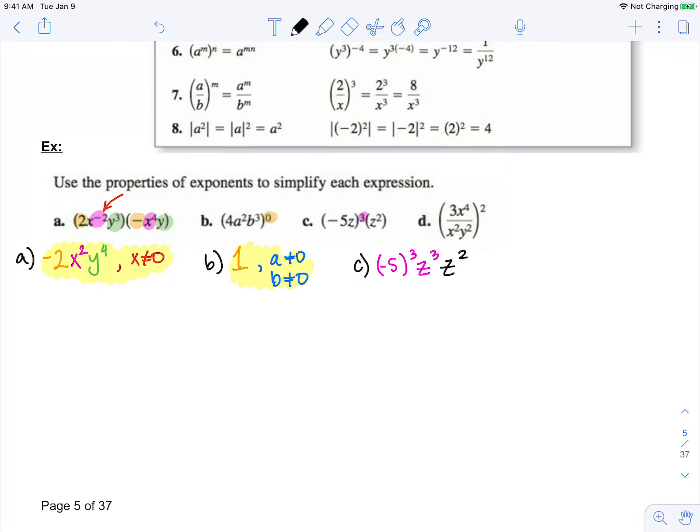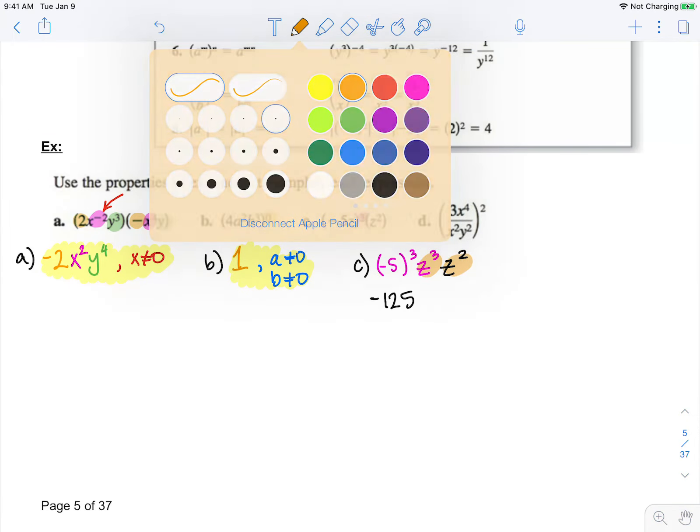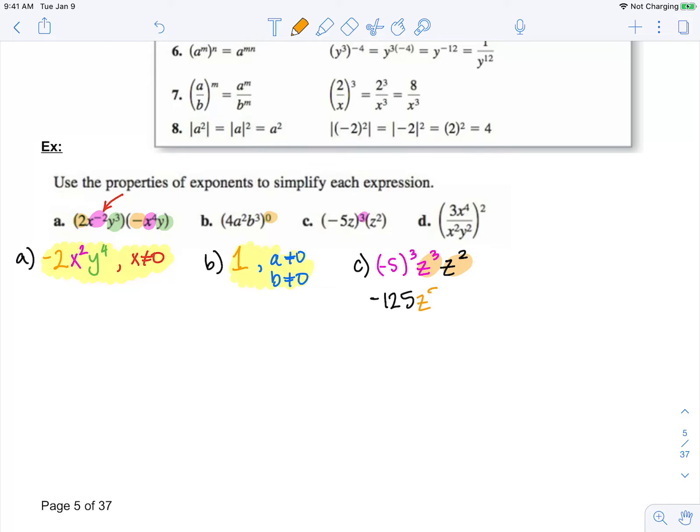So now if I simplify, negative 5 to the 3rd is negative 125, and if I multiply z cubed times z squared, adding my exponents, I get z to the 5th. No excluded values for this problem.